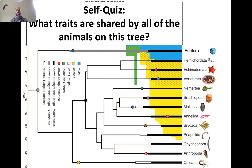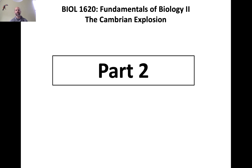For your self-quiz for this part of the lecture, think about what traits are shared by all of the animals on this tree — what things all animals have in common, from sponges to vertebrates to arthropods. Answer that for yourself, and I will see you in the part two video.